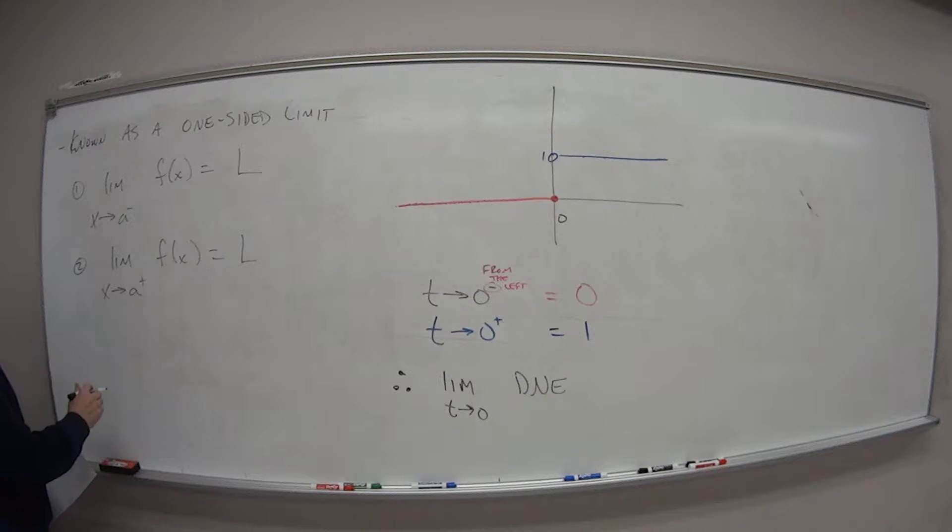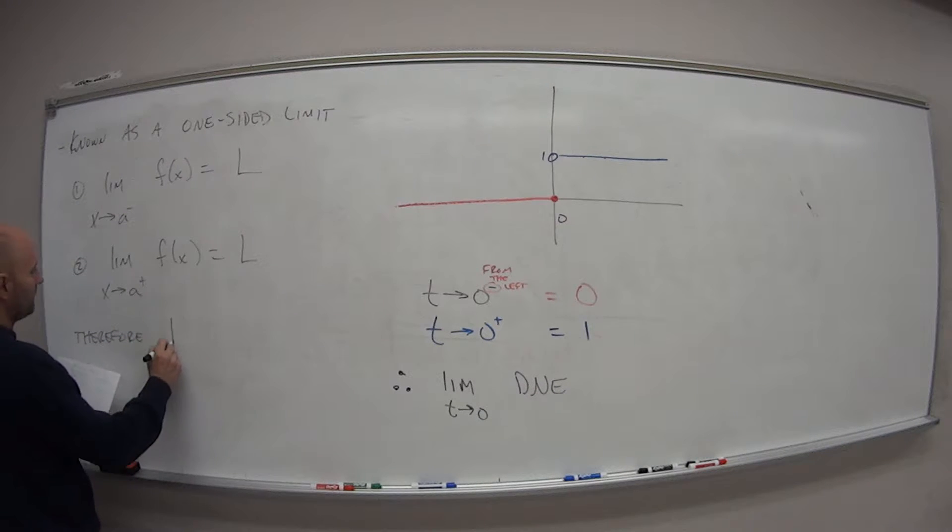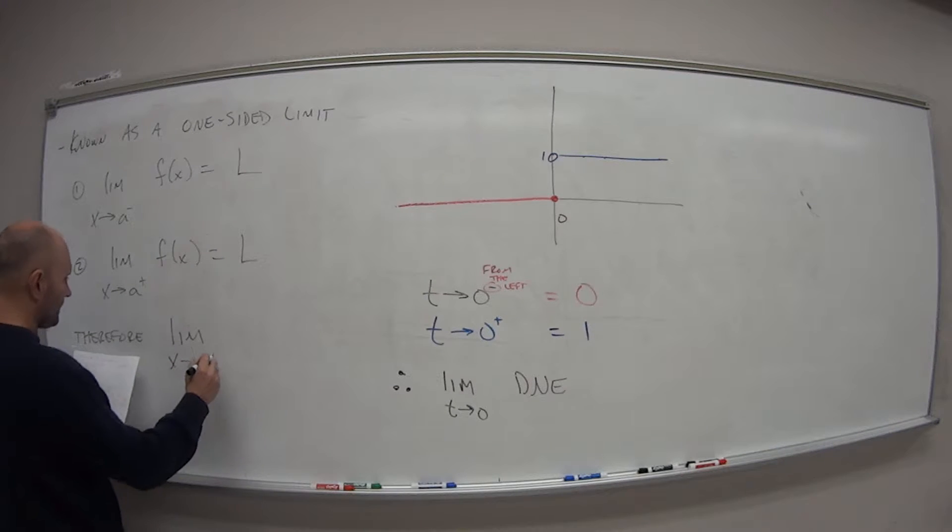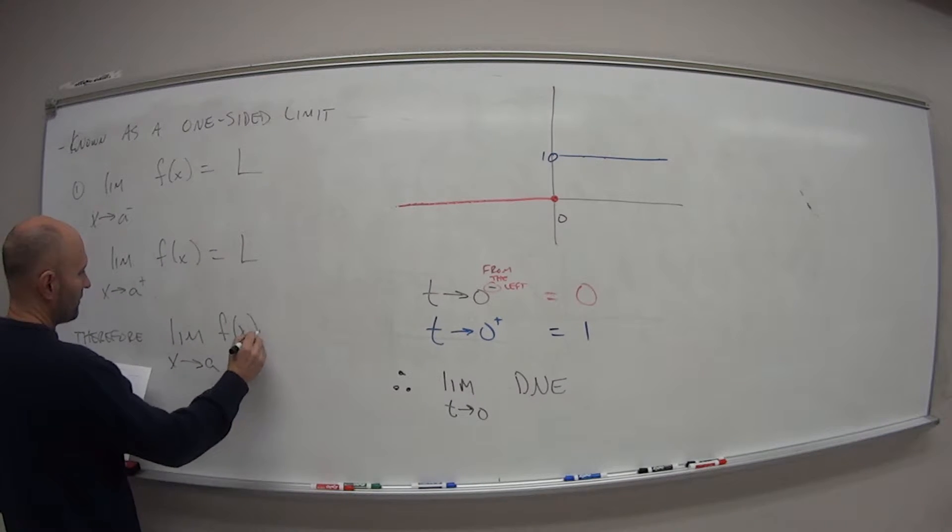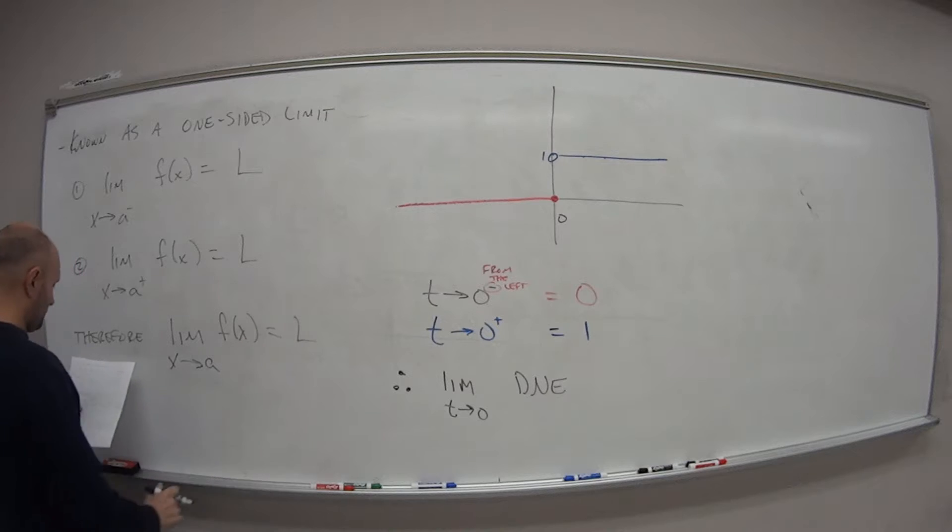So that gives us the following, which is ultra-important. So therefore, the limit as x approaches a of some function f of x is equal to L if and only if, and again, in an earlier video, I sort of used this shorthand notation IFF.